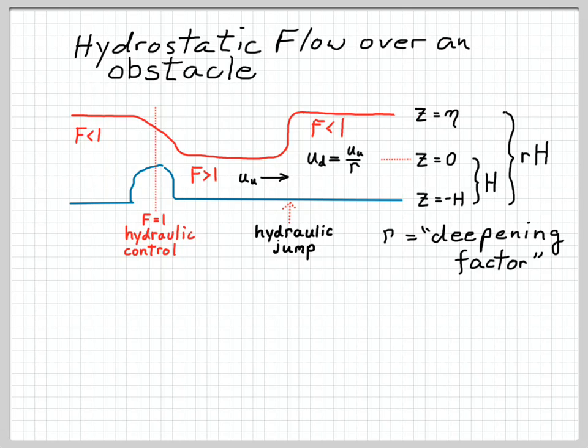We'll introduce some new nomenclature here. We're going to define z equals zero to be the depth of the water just upstream of the hydraulic jump. The surface is at z equals eta, as usual, and the bottom is at z equals minus H. Downstream of the hydraulic jump, the surface is at z equals eta. The depth of the flow upstream of the jump is uppercase H. The depth downstream is defined as rH, where r is a deepening factor.